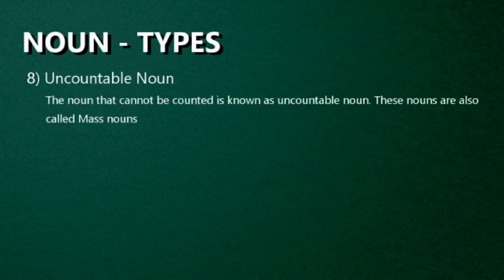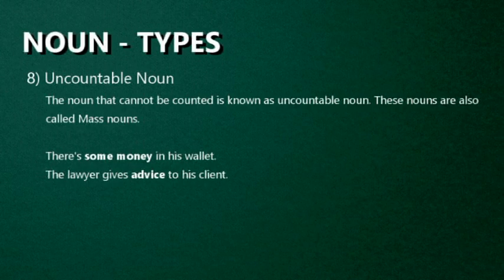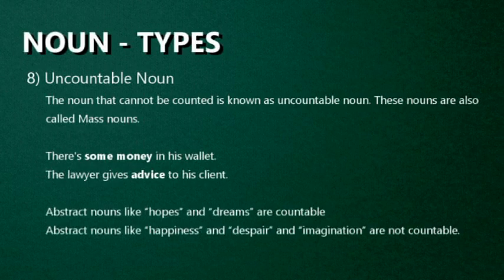Eighth one: Uncountable Nouns. Uncountable nouns refer to things that cannot be counted as individual units, such as water — we cannot say one water, two water, three water. Examples: water, rice, knowledge — these are uncountable nouns. These nouns usually do not have a plural form and cannot be used with numbers or indefinite articles like a or an. But they can be used with quantifiers like some, any, much. For example: There is some money in this wallet. The lawyer gives advice to his client — advice is the uncountable noun. These nouns are also called mass nouns. All abstract nouns are uncountable, but not all uncountable nouns are abstract. Abstract nouns like hopes and dreams are countable, but abstract nouns like happiness, despair, and imagination are not countable.